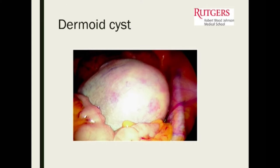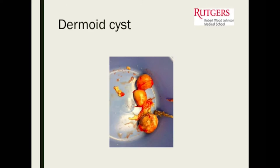Here is a laparoscopic picture of an enlarged ovary. This is a specimen of what a dermoid actually looks like — it's quite striking. It has hair, it can have teeth, it can have fat, and it can have lots of other contents in it.